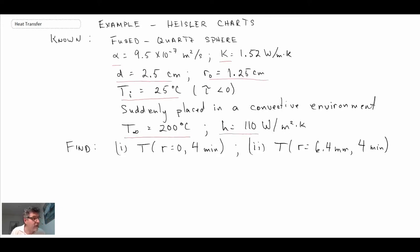A hot convective environment, so it's going to be increasing in temperature. The convective environment is 200 degrees Celsius and h of 110 watts per meter squared Kelvin. We're told to calculate two things: one is the temperature at the centerline after four minutes, and then the temperature at a radial location of 6.4 millimeters after four minutes.